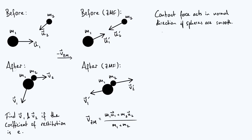The next key realization is that when the spheres are in contact during the infinitesimally short moment of the collision, there is a force acting between them. If the spheres are smooth, that contact force acts in the normal direction — the vector going from the center of one sphere to the center of the other, which we label n-hat. If there were a component of the contact force perpendicular to n, it would be a frictional force, and smooth spheres have no friction.